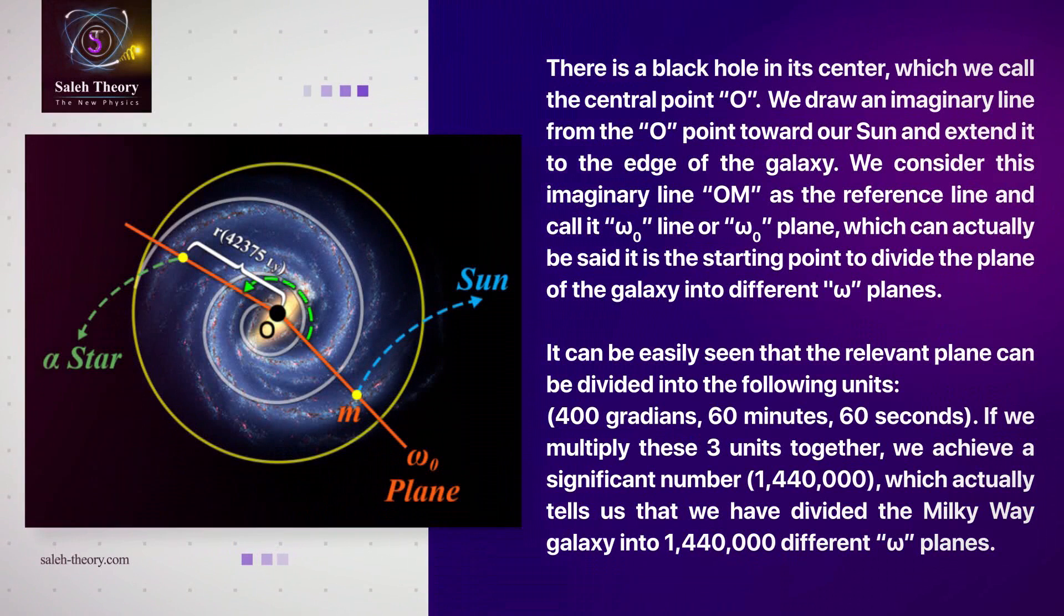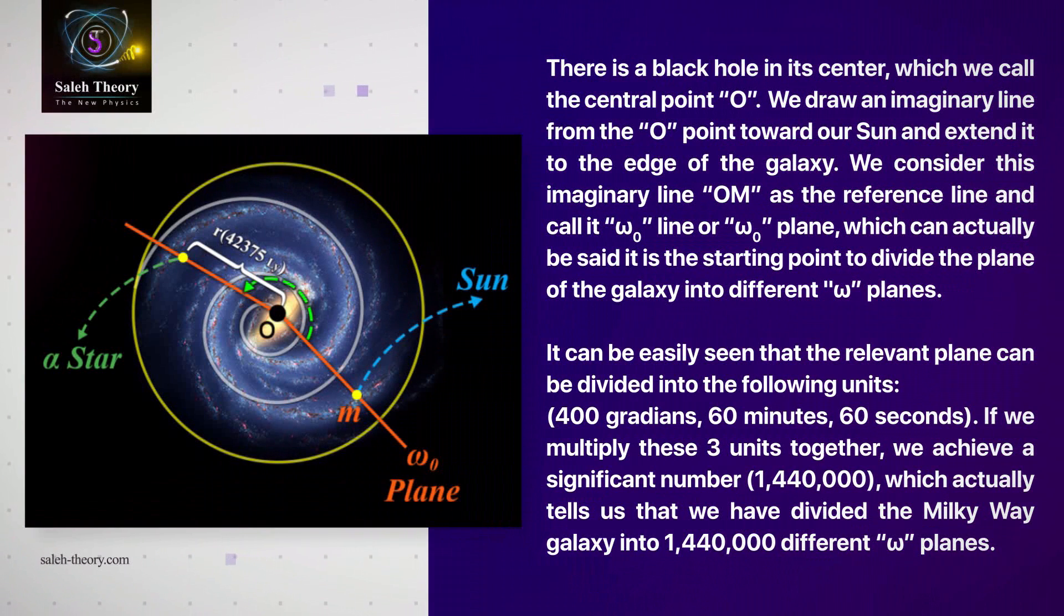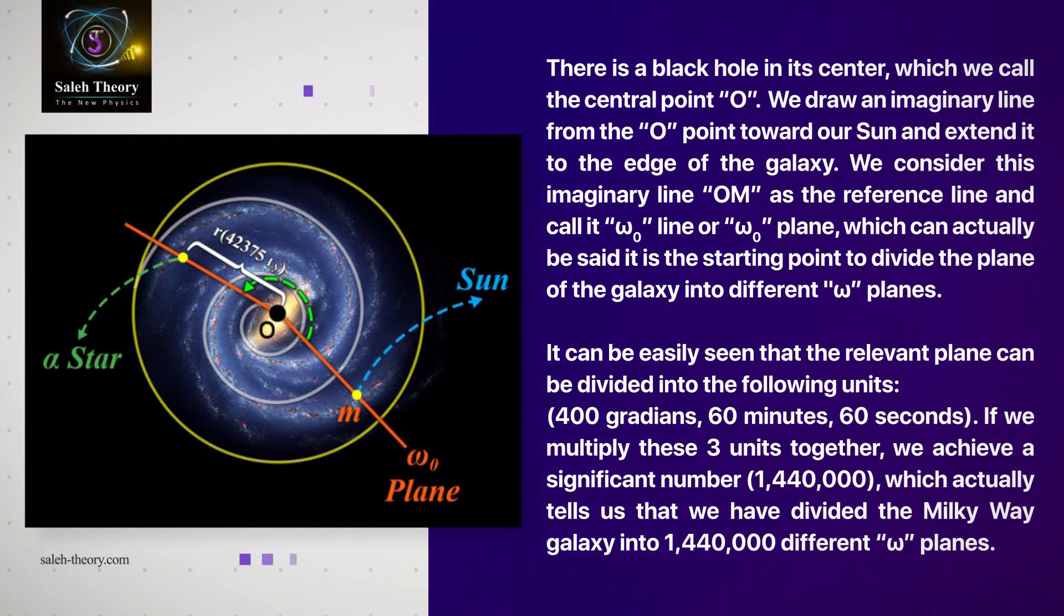It can be easily seen that the relevant plane can be divided into the following units: 400 gradients, 60 minutes, 60 seconds. If we multiply these three units together, we achieve a significant number (1,440,000), which actually tells us that we have divided the Milky Way galaxy into 1,440,000 different omega planes.